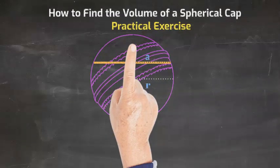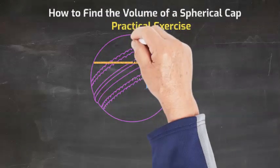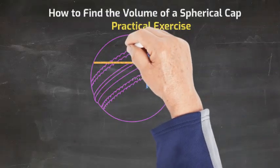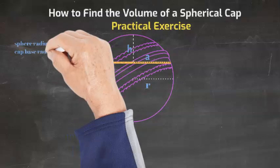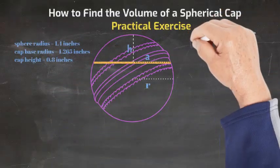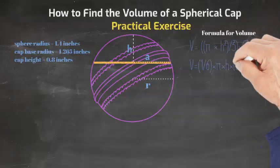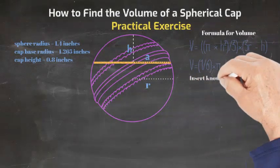We have the known values of this sphere's radius as well as the spherical cap's radius and height. Let's insert the values of this sphere's radius which is 1.4 inches represented by r, the cap base radius which is 1.265 inches represented by a.